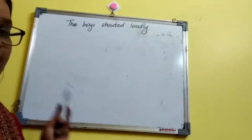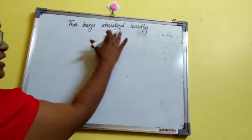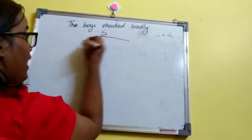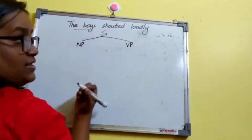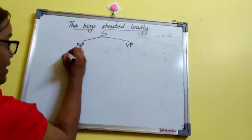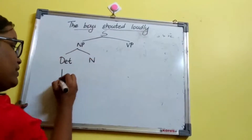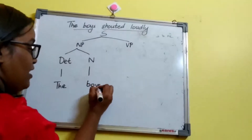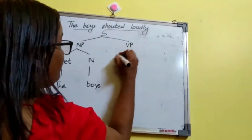Let's do another IC analysis with another simple sentence: 'The boys shouted loudly.' First of all, S is equal to NP plus VP. NP is 'the boys' and VP is 'shouted loudly'. For NP, it is again determiner plus noun — determiner is 'the' and noun is 'boys'. Now VP is 'shouted loudly' — how do we divide it into two?